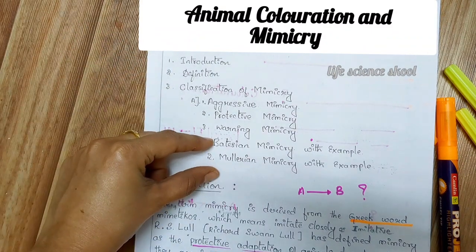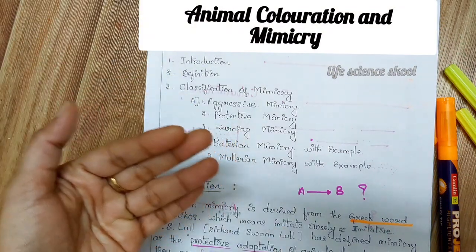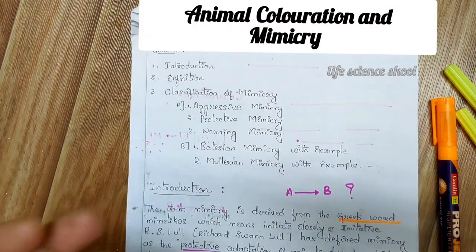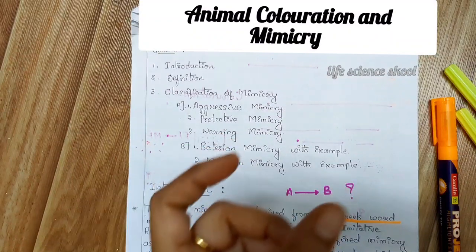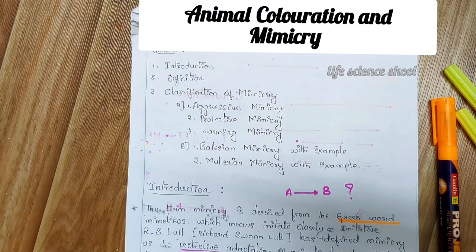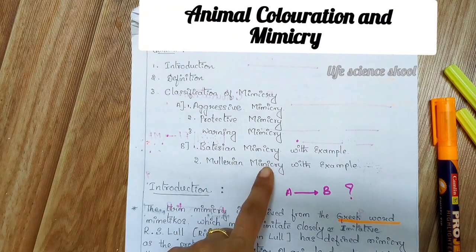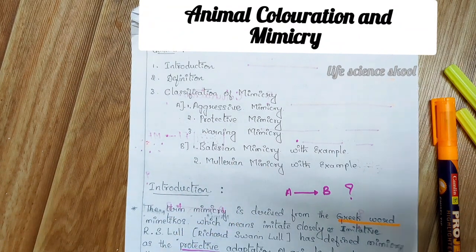In this video, we will discuss these two in detail, and I will add some animal coloration and mimicry in short form so that you will get some idea about those points, and then that will help you to face the exam. So without further delay, let's start with the first one, that is Batesian mimicry with examples.